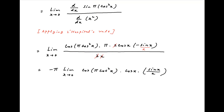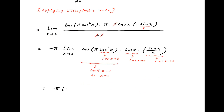Now, when x tends to 0, cos x tends to 1, or cos squared x tends to 1. And therefore, cos of pi times cos squared x tends to cos pi, which is equal to minus 1. Also, when x tends to 0, cos x tends to 1 and sin x upon x also tends to 1. Therefore, the value of the given limit is equal to minus pi times minus 1 times 1 times 1, which is equal to pi, which is the required answer.